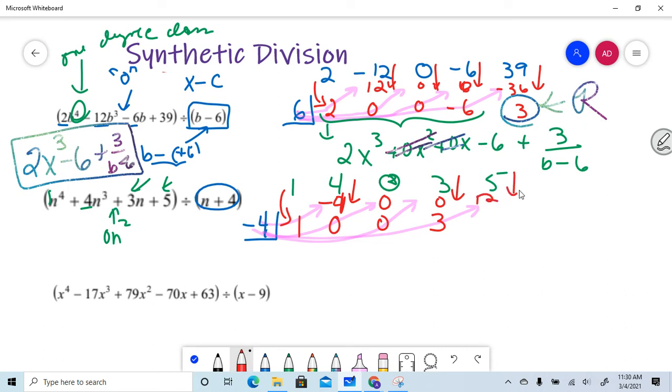And then when I add coming down, I'm sorry, it gives me negative 12. When I add coming down, I get negative seven. This last term is the remainder.